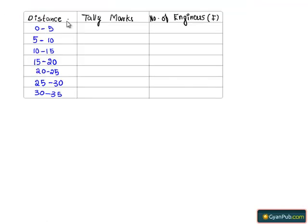The distance were taken as group data, from 0 to 5 to 30 to 35. We shall take the tally marks and number of engineers as frequency.